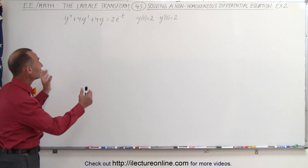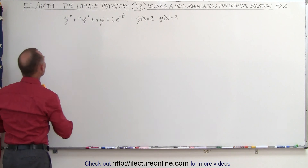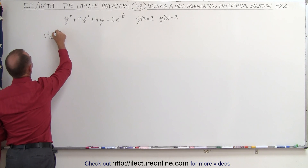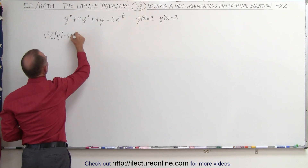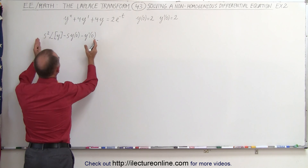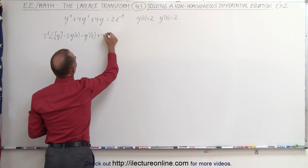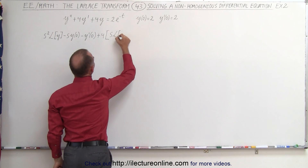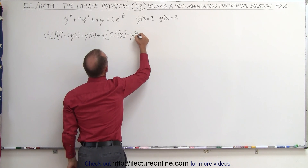The approach is still the same. We're going to take the Laplace transform of both sides of the equation, starting with y double prime. That becomes s squared times the Laplace transform of y minus s times the function evaluated at zero, minus the derivative of the function evaluated at zero. This is added to 4 times the Laplace transform of y prime, which is s times the Laplace transform of y minus the function evaluated at zero.